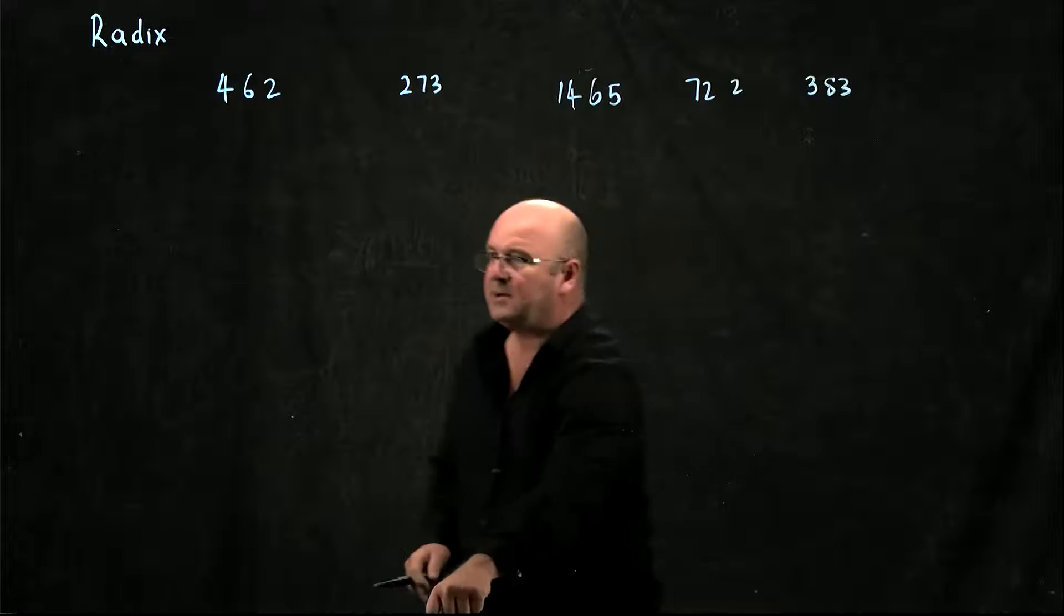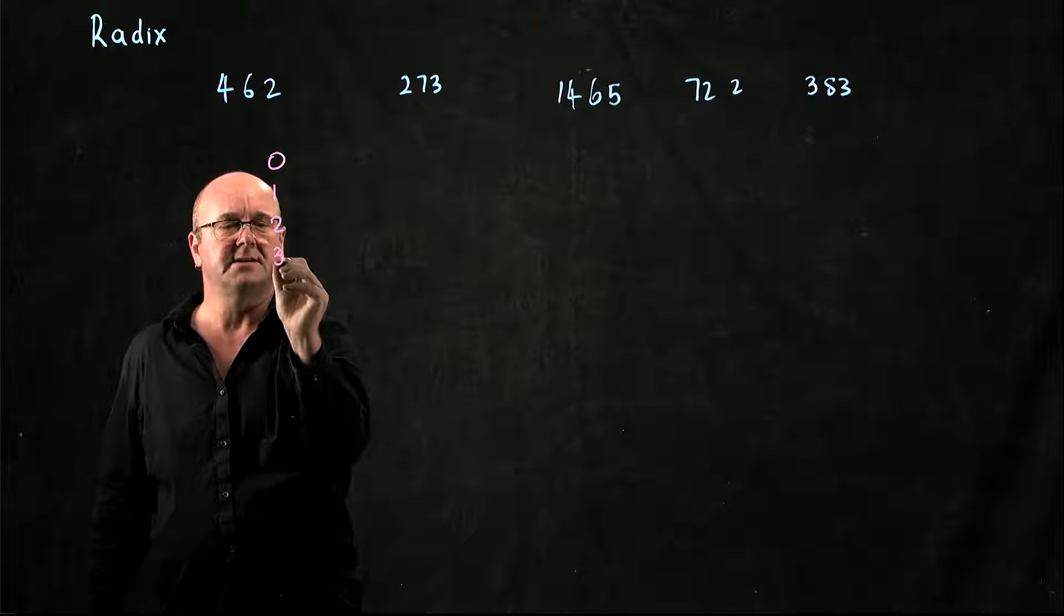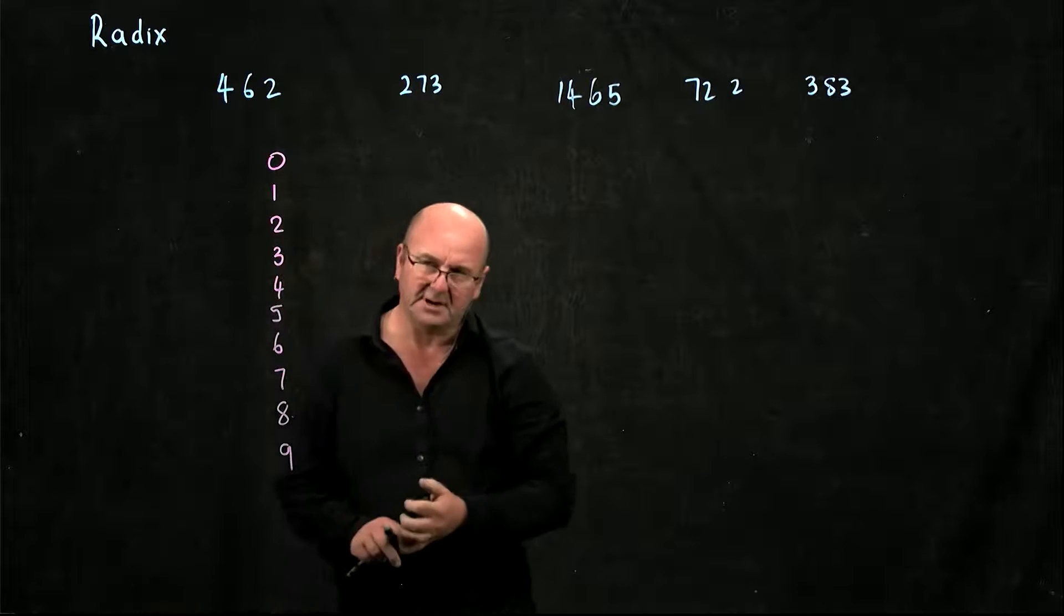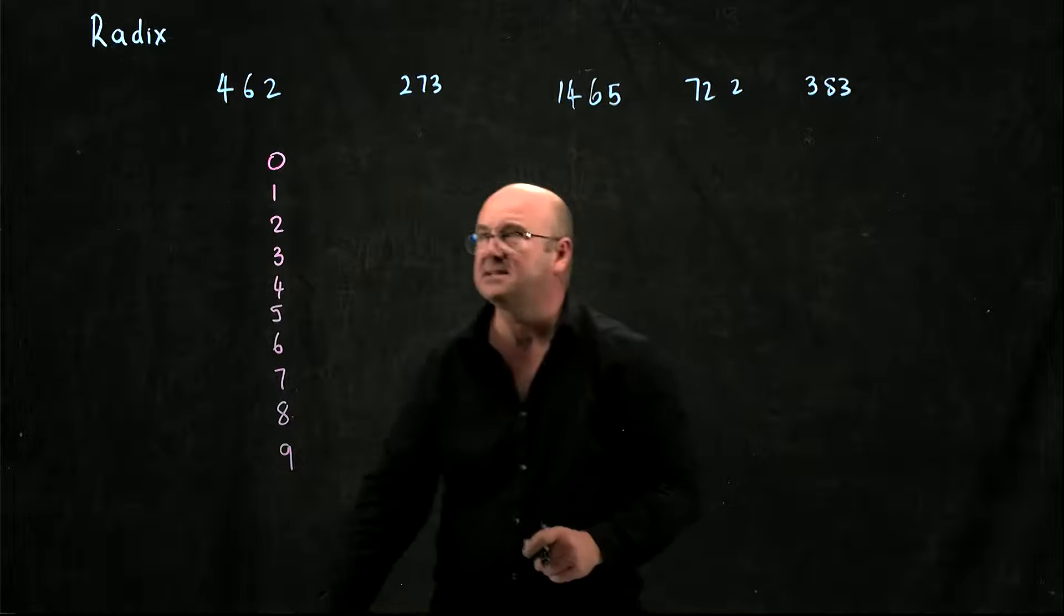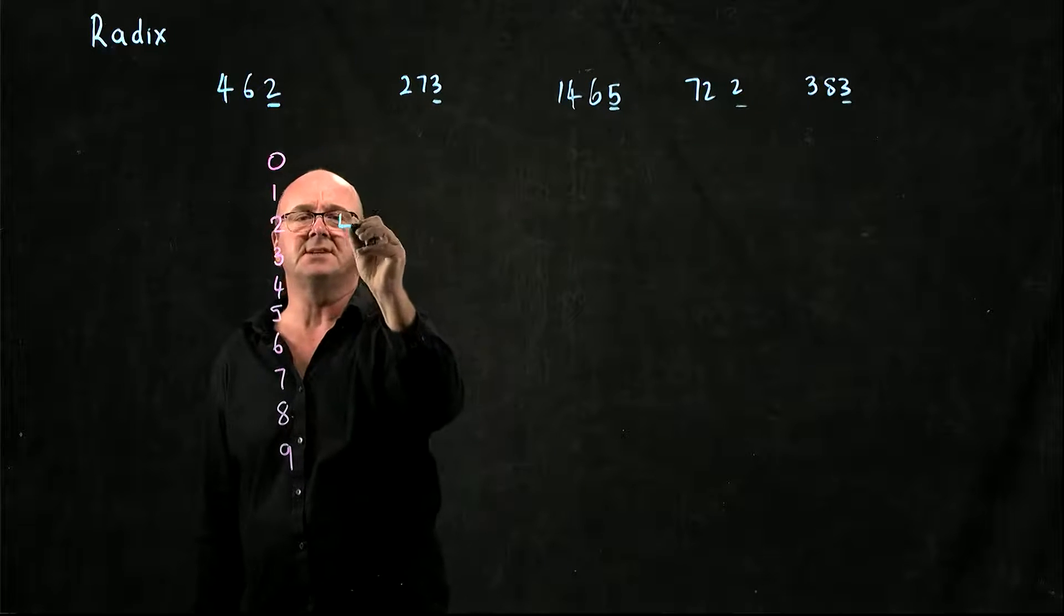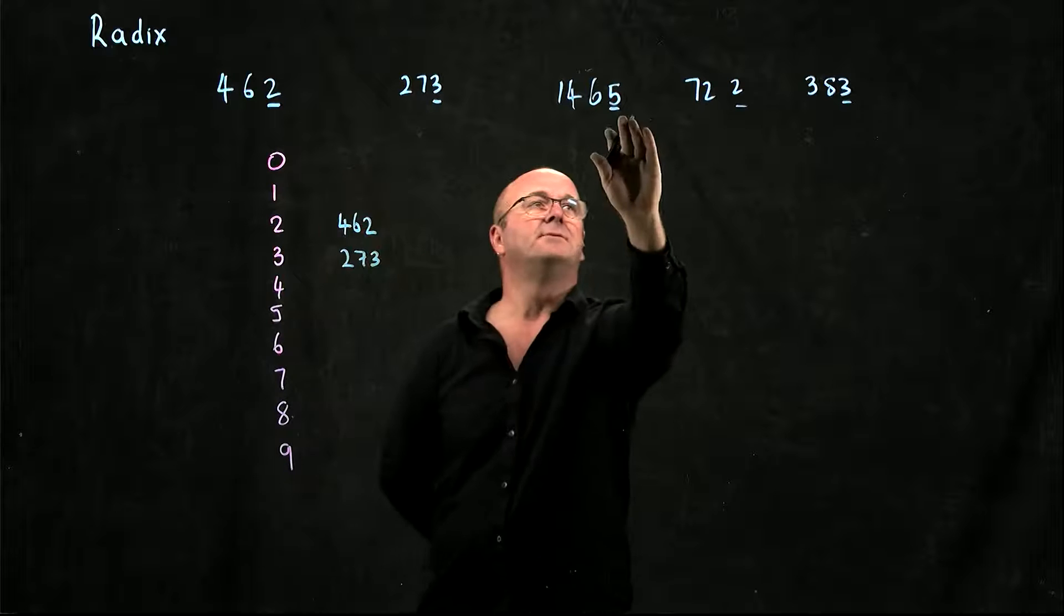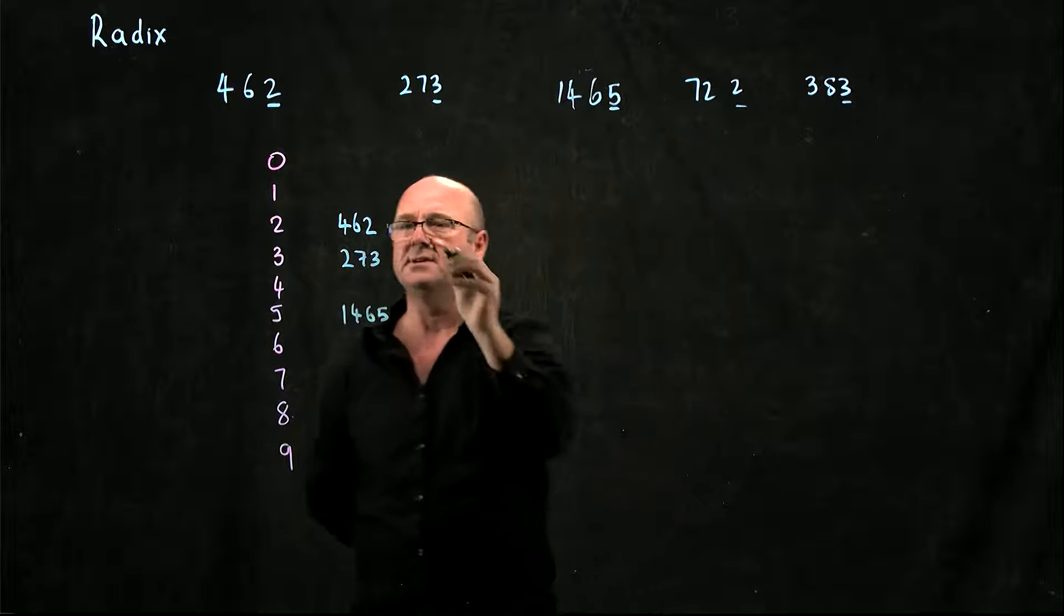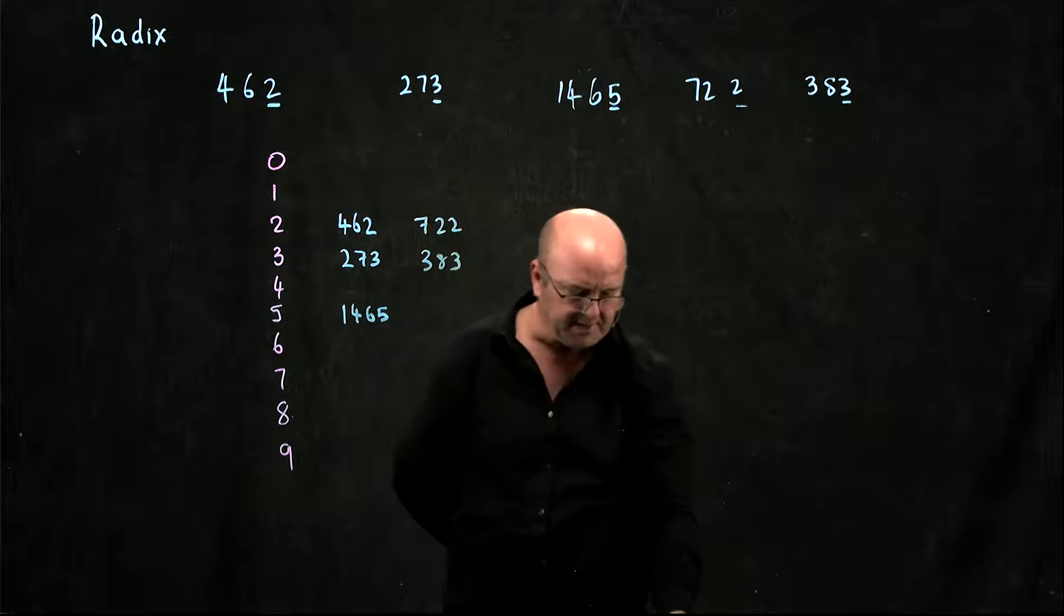The way that radix sort works is I create a set of bins. I'm going to have my bins 0 through 9. And what I'm going to do initially is sort my list based on the units number. So 462 is going to go in the 2 bin, 273 in the 3 bin, 1465 in the 5 bin, 722 in the 2 bin, and 383 in the 3 bin.